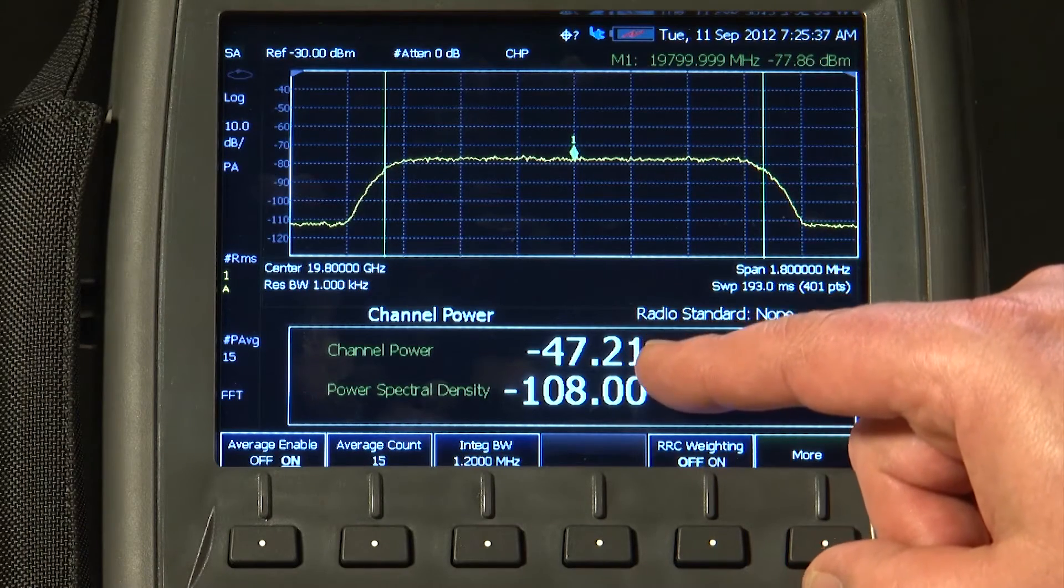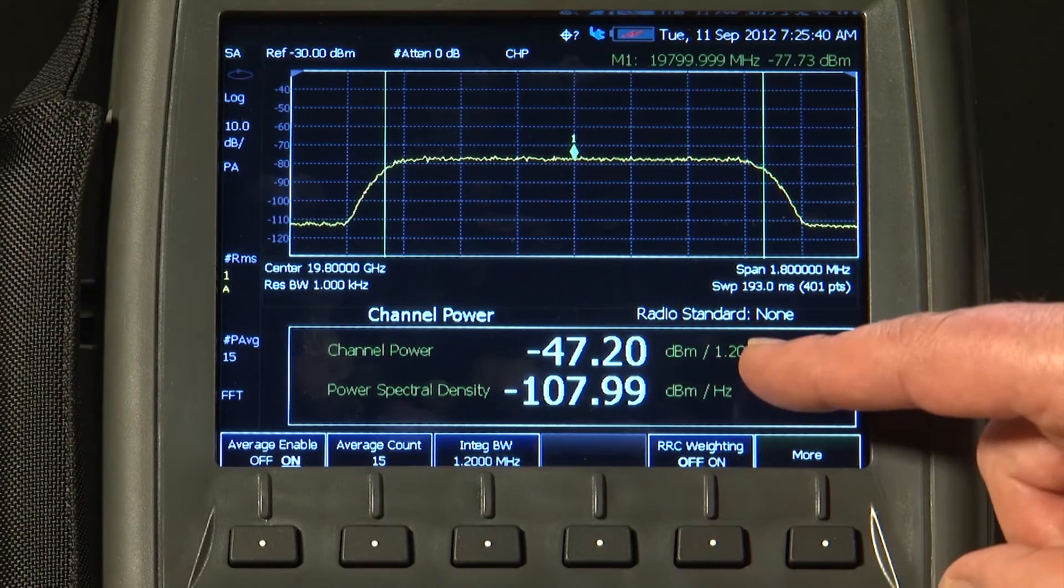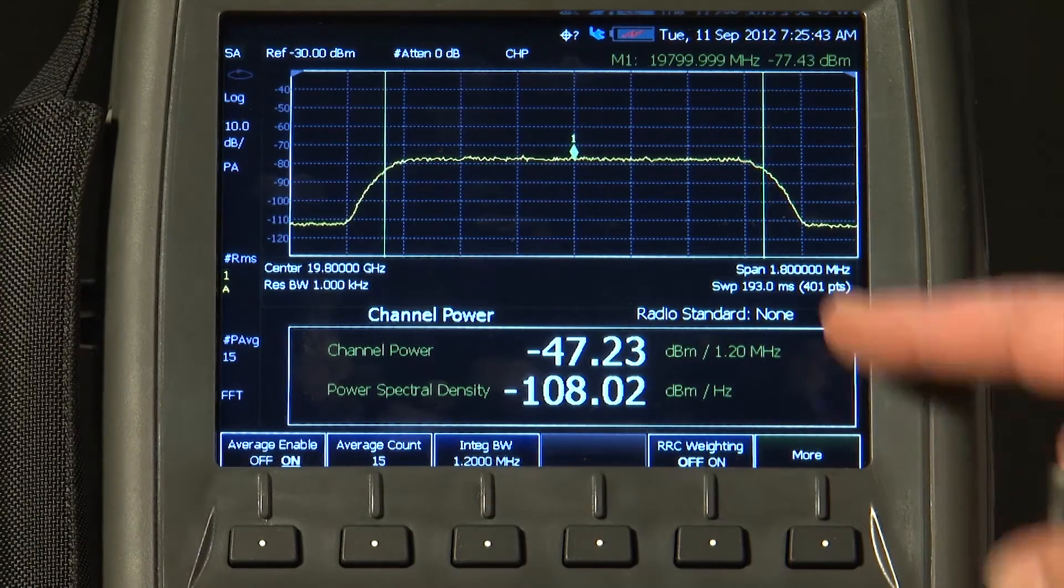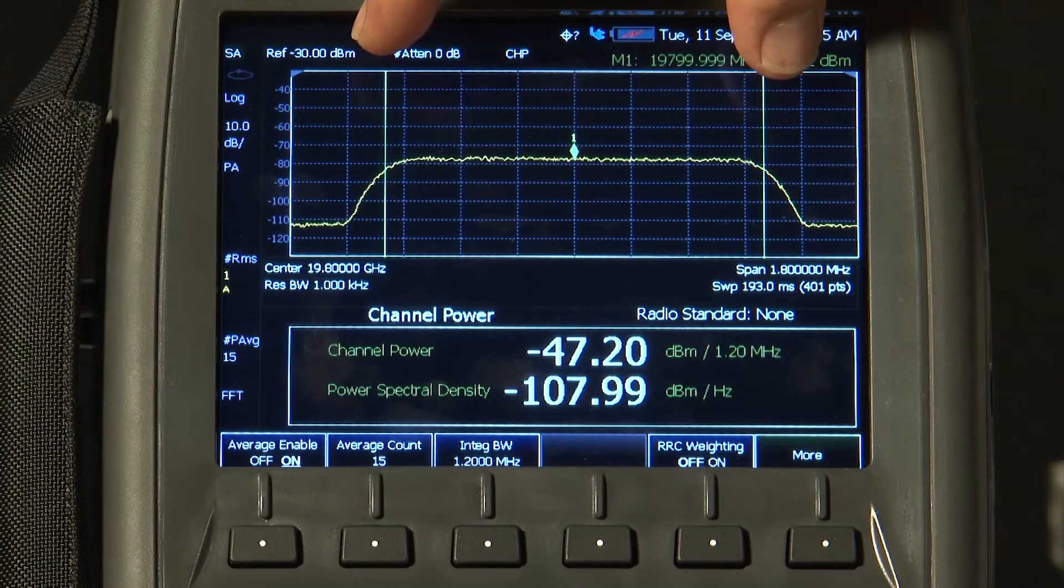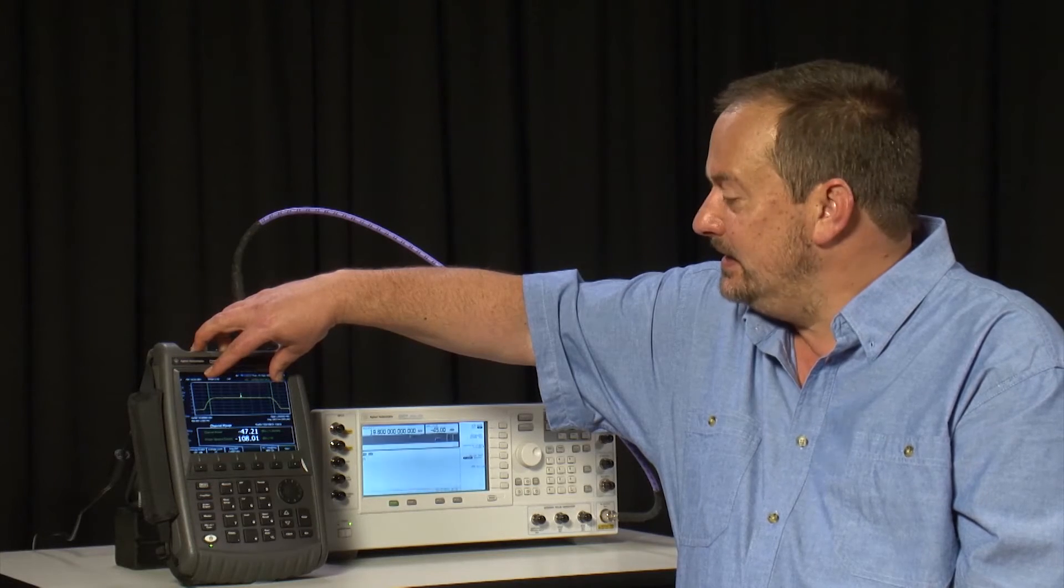the channel power. It says minus 47 dBm per 1.2 MHz. In other words, between these Markers here, which are spaced 1.2 MHz apart,